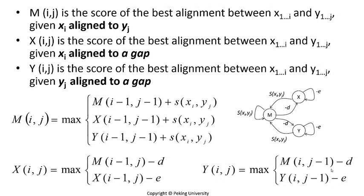We can then write the corresponding dynamic programming recursive formula. M(i,j) stands for the score of the best alignment between sub-sequences of sequence X from the first base to the i-th base, and sub-sequences of sequence Y from the first base to the j-th base, with x_i aligned to y_j. X(i,j) or Y(i,j) stand for the score of the best alignment between the same sub-sequences when x_i or y_j is aligned to a gap.